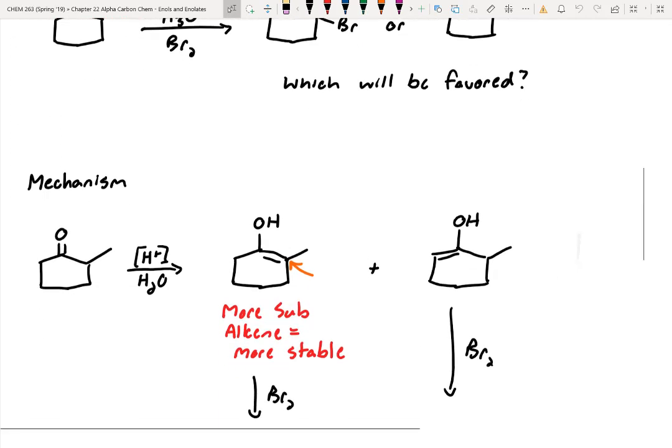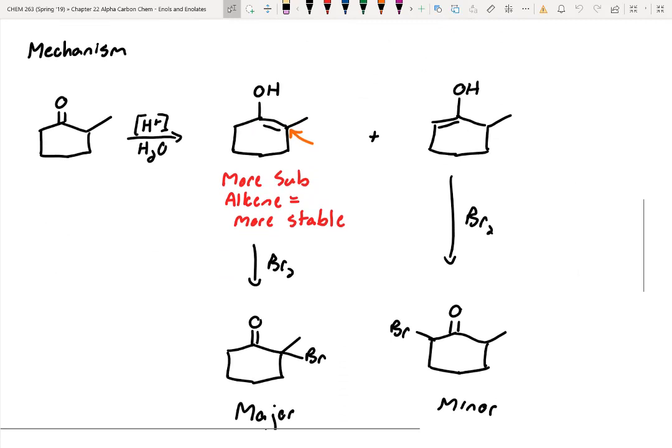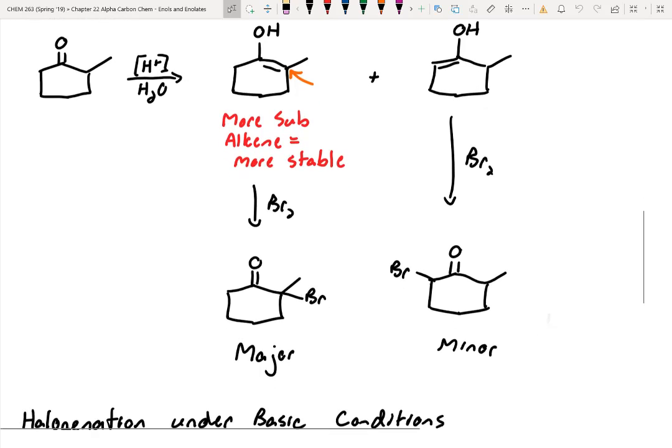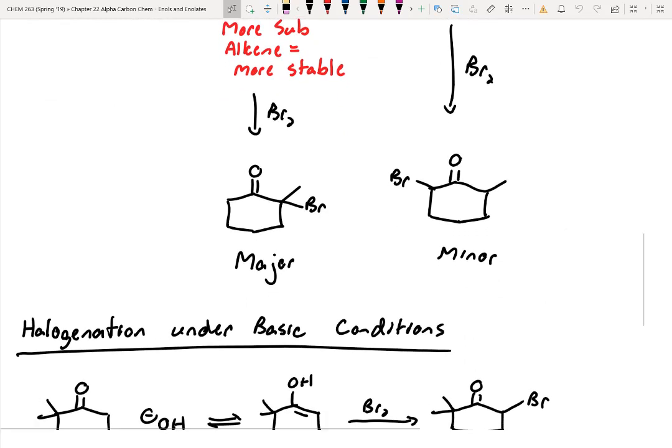Then we said things get tricky when you run into the situation where you have an unsymmetric carbonyl, whether that's an aldehyde or ketone. You typically go through the more substituted enol. In this case, the enol on the left is more substituted, therefore more stable, so you tend to halogenate the more substituted position.